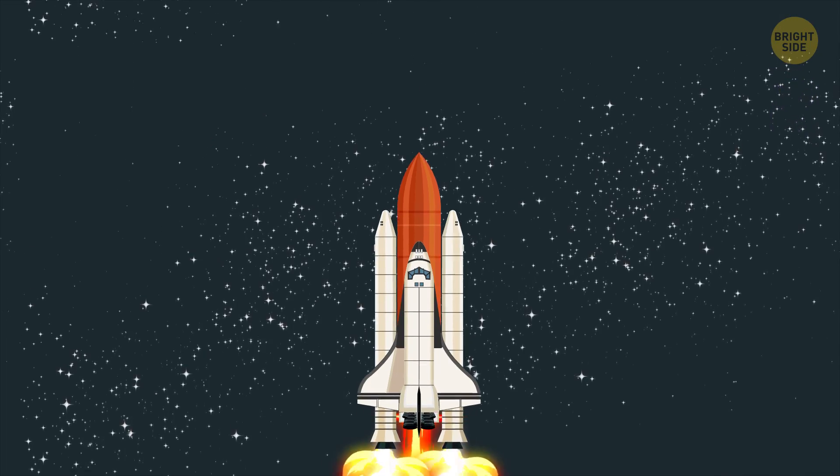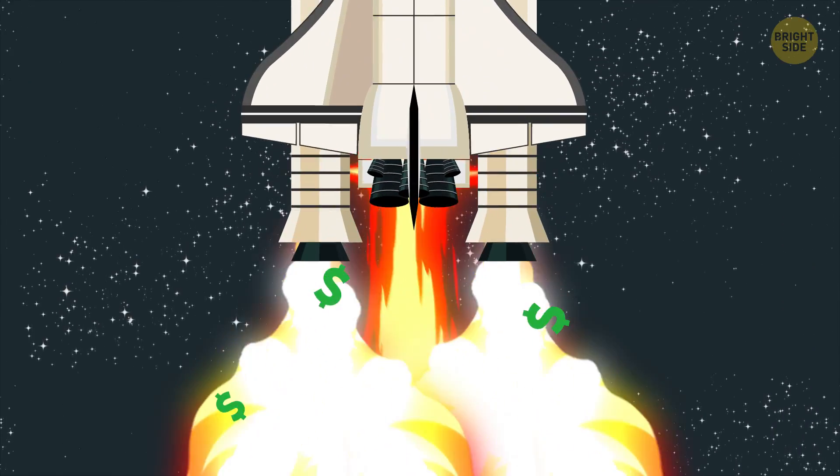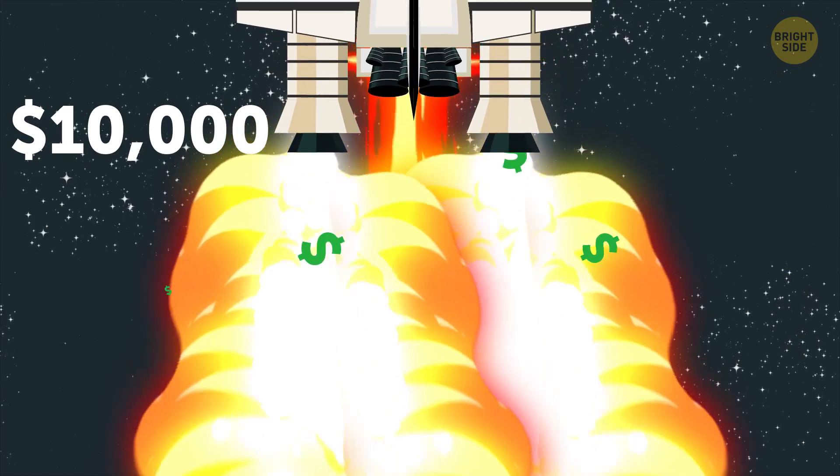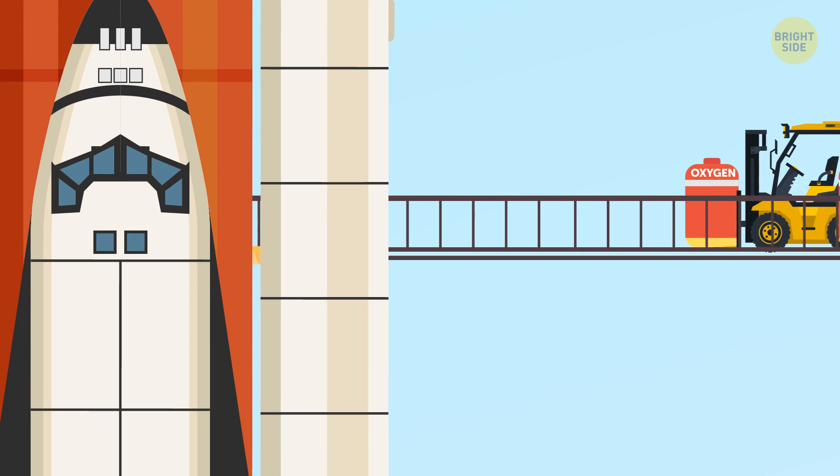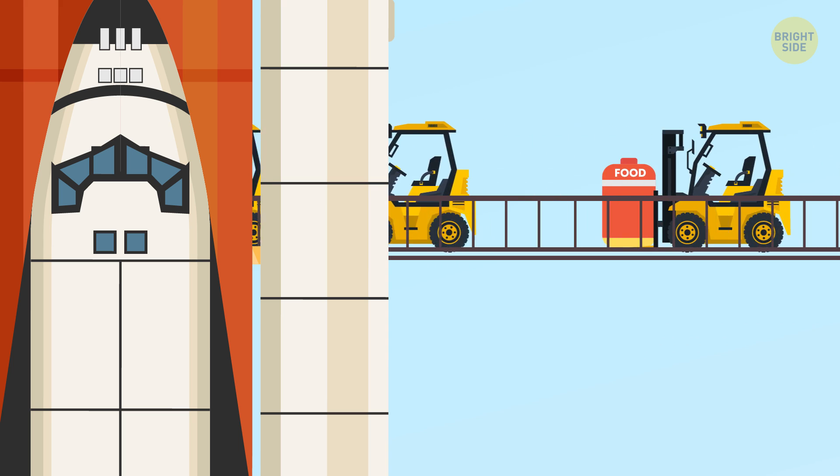I'll just put it this way: sending one pound of cargo into space costs about $10,000, not including tip. So how do space agencies afford to send supplies like oxygen, water, and food to their astronauts?